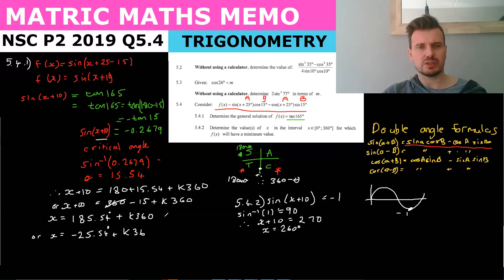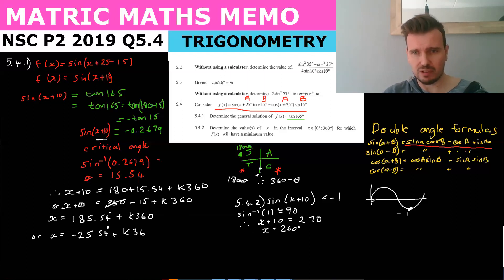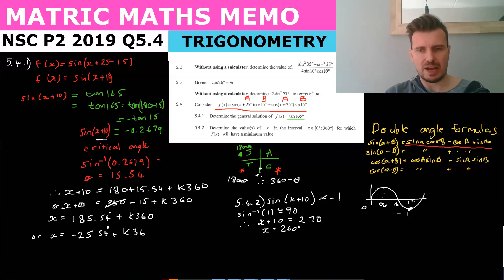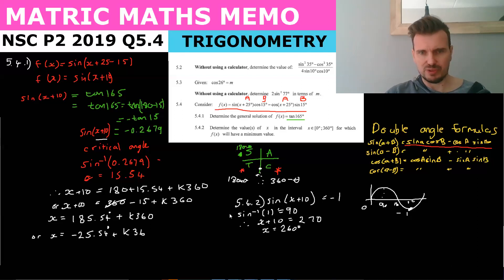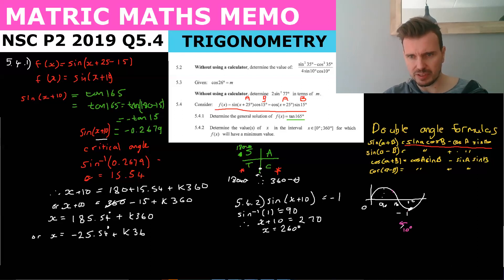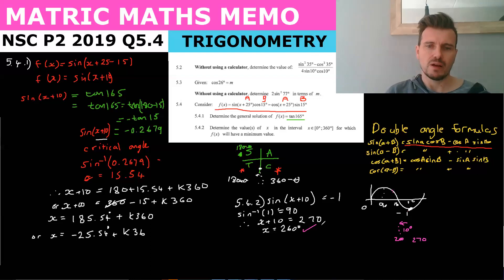We can verify this graphically. The sine graph has a minimum at 270 degrees. The '+10' in (x + 10) shifts the graph to the left by 10 degrees, so the minimum moves from 270 back by 10 to 260 degrees — which confirms our answer.